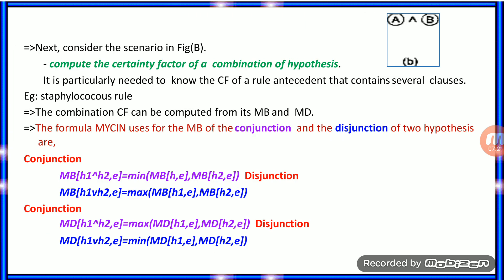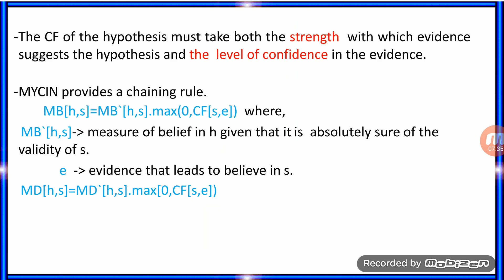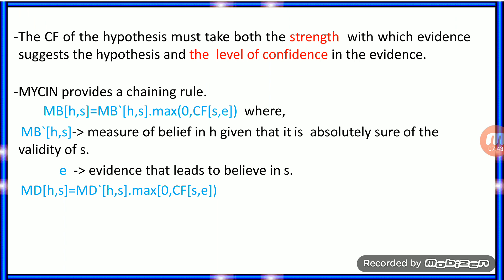In the second scenario, the formula is used with conjunction and disjunction of two hypotheses. Rules are chained together so that the uncertain outcome of one rule provides the input to another. The CF of the hypothesis must account for both the strength with which evidence suggests the hypothesis and the level of confidence in the evidence. This is the chaining rule formula used in Mycin.